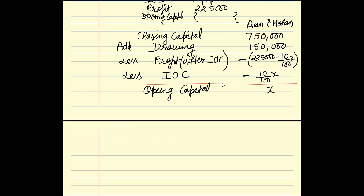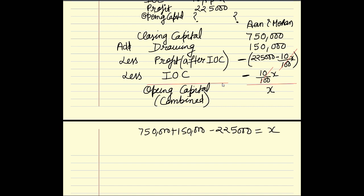The minus IOC terms cancel each other out, so the equation becomes: X = 7,50,000 + 1,50,000 − 2,25,000. Solving this, X = 6,75,000. This is the combined opening capital of both Aan and Mohan.